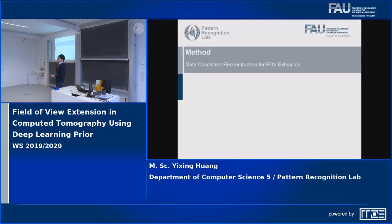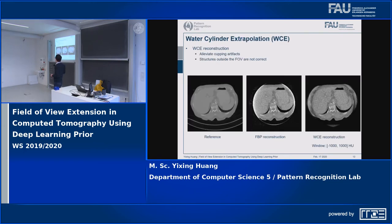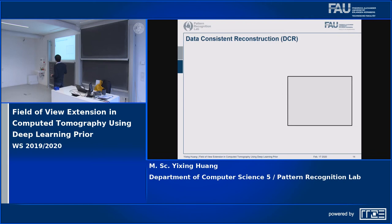Now I will talk about the details of how we apply this method. The neural network we use is the U-Net. For the input of the U-Net, we use images reconstructed with the water cylinder extrapolation method, which we call WCE for short. WCE is a widely used extrapolation method. With WCE extrapolation, the cupping artifacts are reduced very well; however, the anatomical structures outside the FOV are still not correct compared with the ground truth. That is why we need deep learning to further improve the image. The U-Net is a post-processing neural network, so this image-to-image prediction has no direct connection to the measured data, and some incorrect structures will occur.